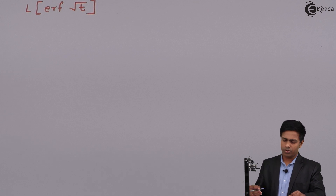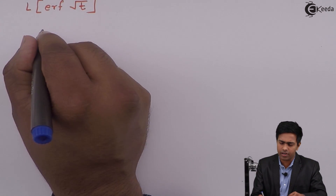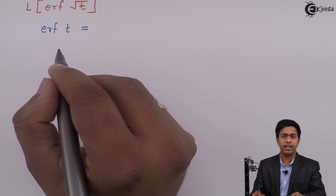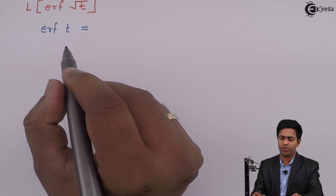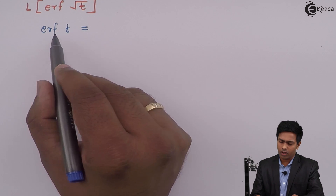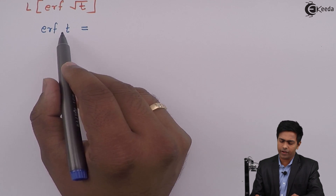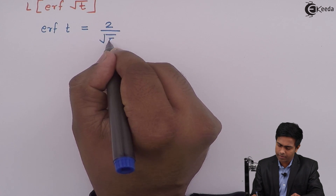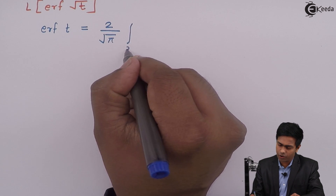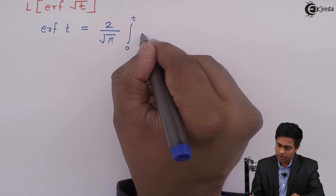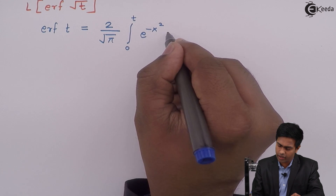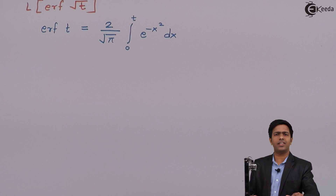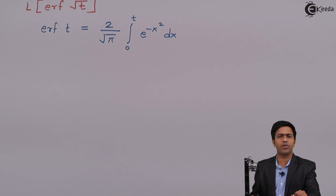The error function is defined as erf(t) = (2/√π) × integration from 0 to t of e^(−x²) dx. So this is the definition of error function of t.